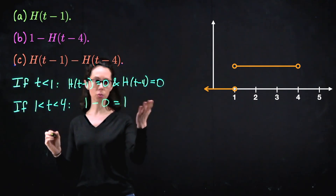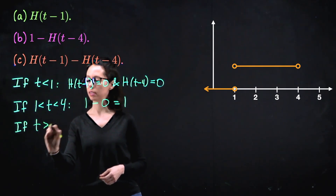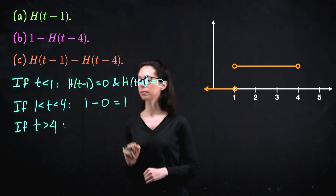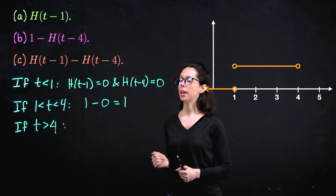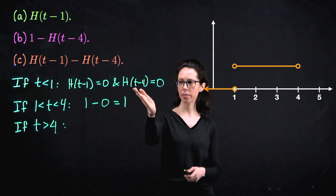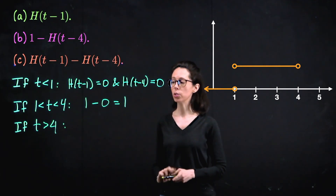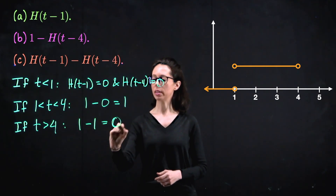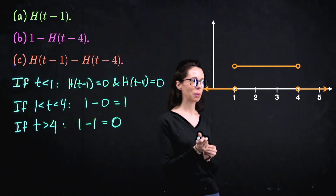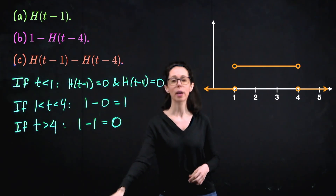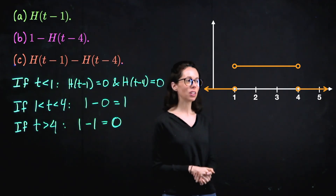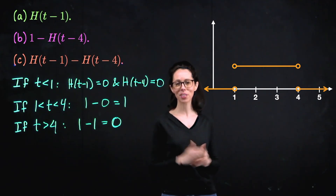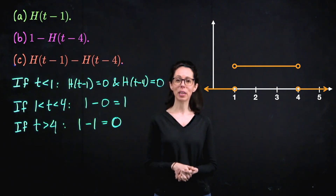Now to the right of four: both heavyside functions individually are one, so we get one minus one, which is zero. Our function jumps back down to zero when time equals four. So this is like a signal that turns on and then turns off — you flip something on and then a little bit later you flip it off. That's another option you can set up with this combination of Heaviside functions.